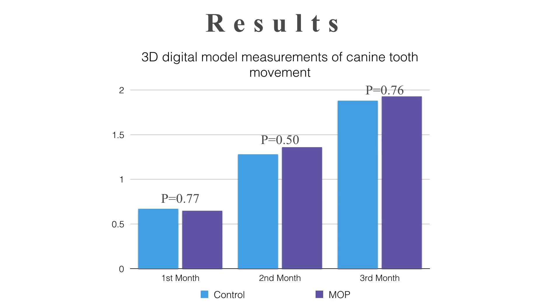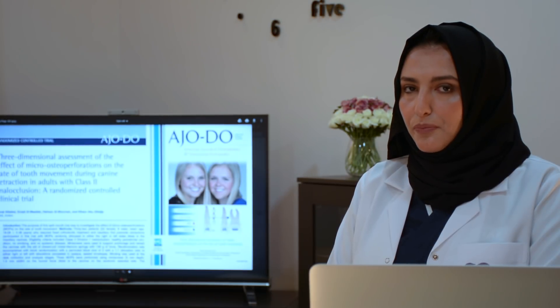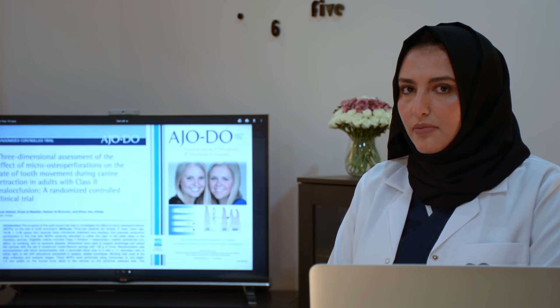The results showed there was no statistically significant difference in the rate of tooth movement between the MOP and control sides at all time points. Anchorage loss, canine tipping, and canine rotation as secondary outcomes and co-founders also showed no statistically significant difference between the MOP and control sides, meaning these co-founders did not affect our results.